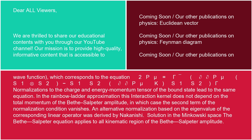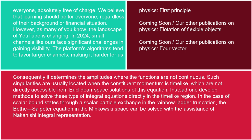Solution in Minkowski space: the Bethe-Salpeter equation applies to all kinematic regions of the Bethe-Salpeter amplitude. Consequently, it determines the amplitudes where the functions are not continuous. Such singularities are usually located when the constituent momentum is timelike, which are not directly accessible from Euclidean space solutions of this equation. Instead, one develops methods to solve these types of integral equations directly in the timelike region. In the case of scalar bound states, through a scalar particle exchange in the rainbow-ladder truncation, the Bethe-Salpeter equation in Minkowski space can be solved with the assistance of the Nakanishi integral representation.